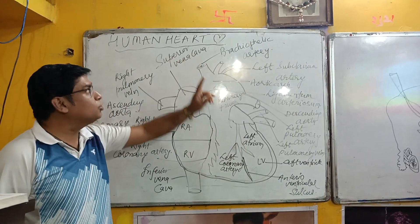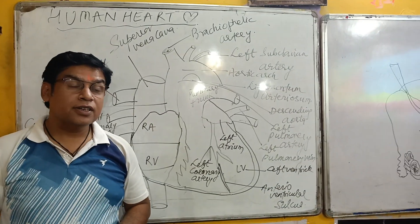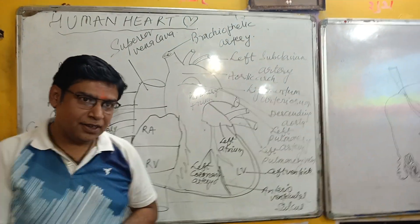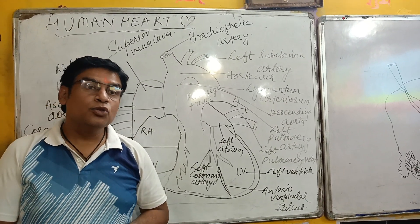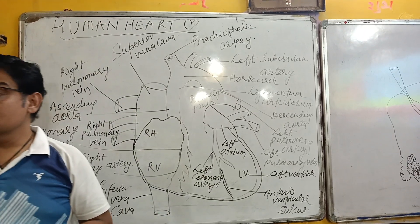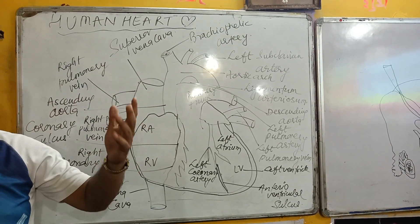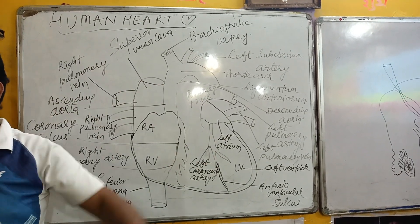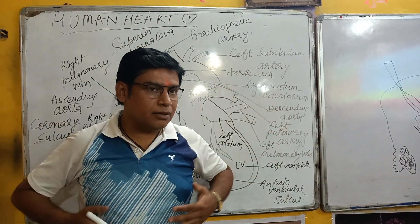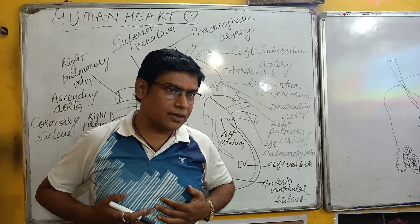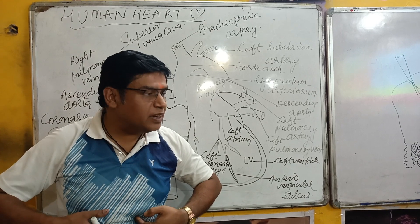Let us discuss something about the human heart. It is an organ which consistently and continuously pumps blood to your body. The human heart is hollow and muscular. Its position is under the breast bone and in between the lungs.